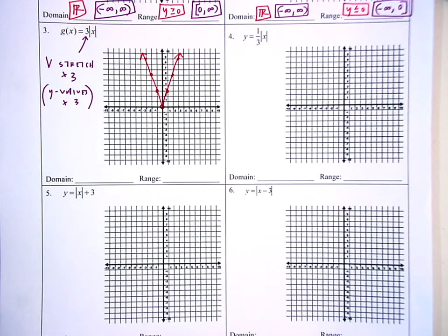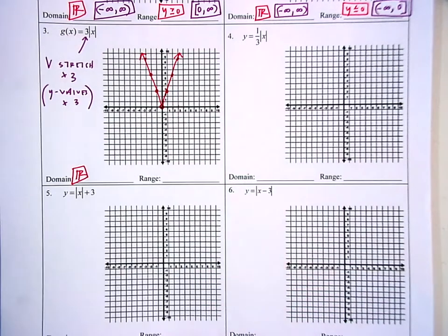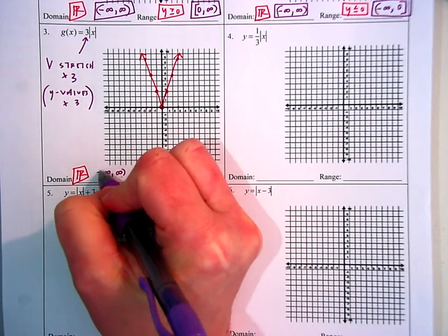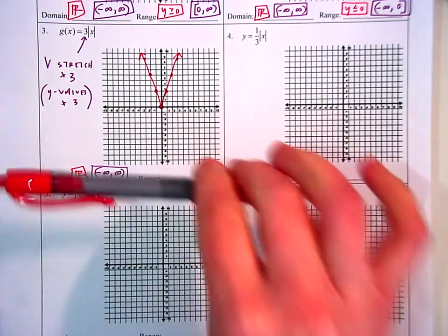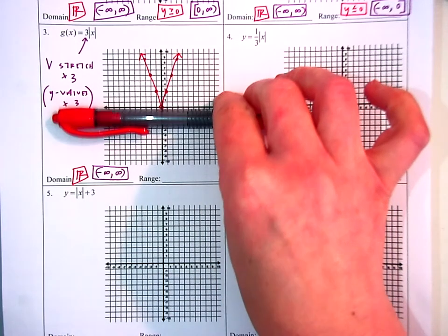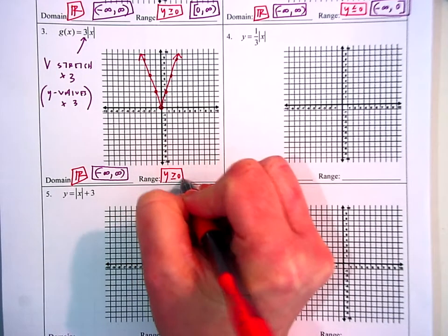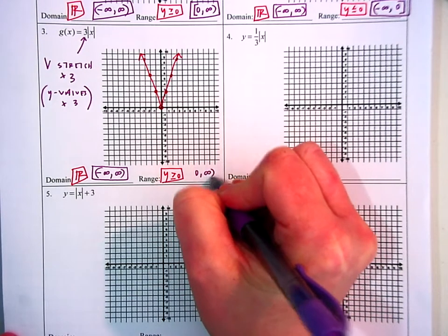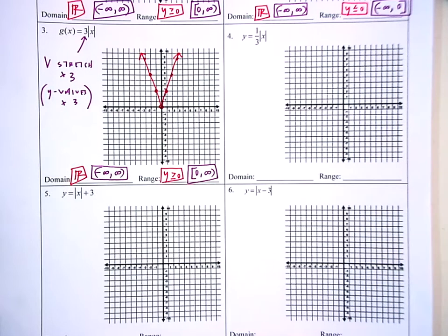The domain is all real numbers — in interval notation, negative to positive infinity in soft brackets. For the range, the lowest value is zero or anything more, so Y is greater than or equal to zero, or from zero to infinity with a hard bracket on zero.